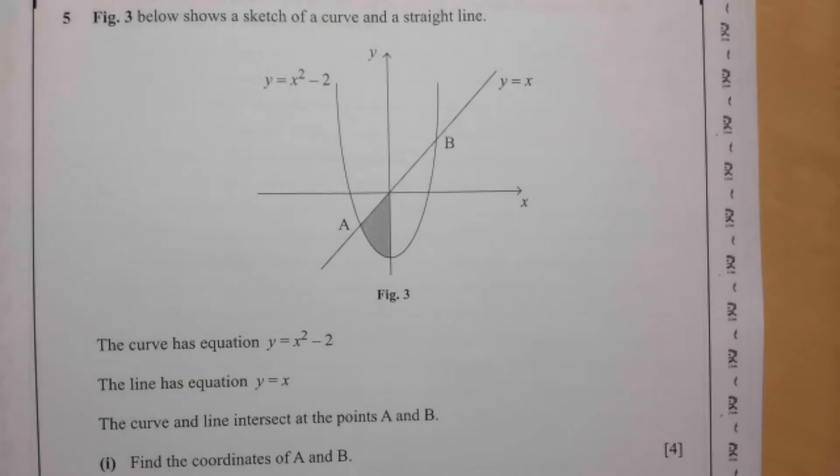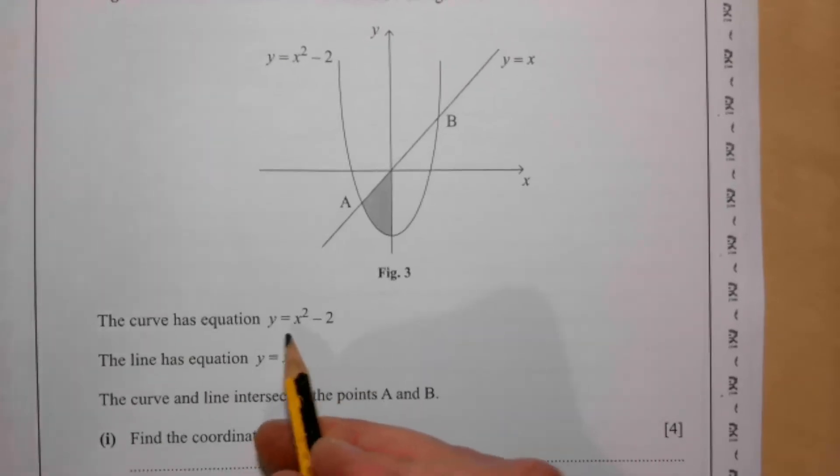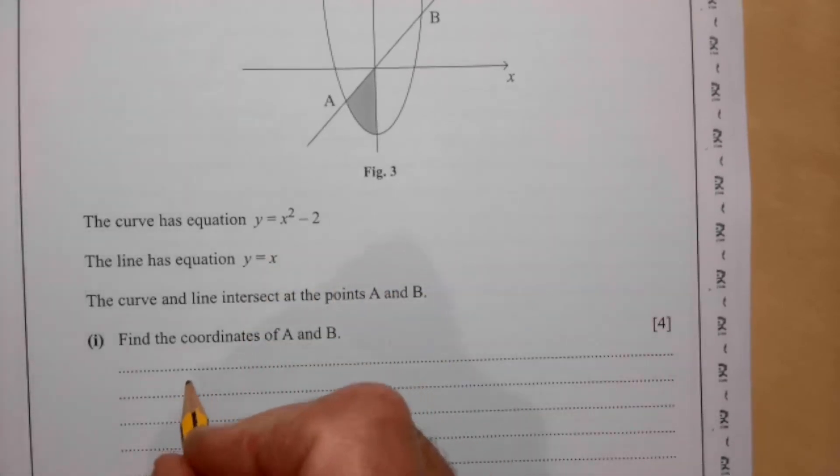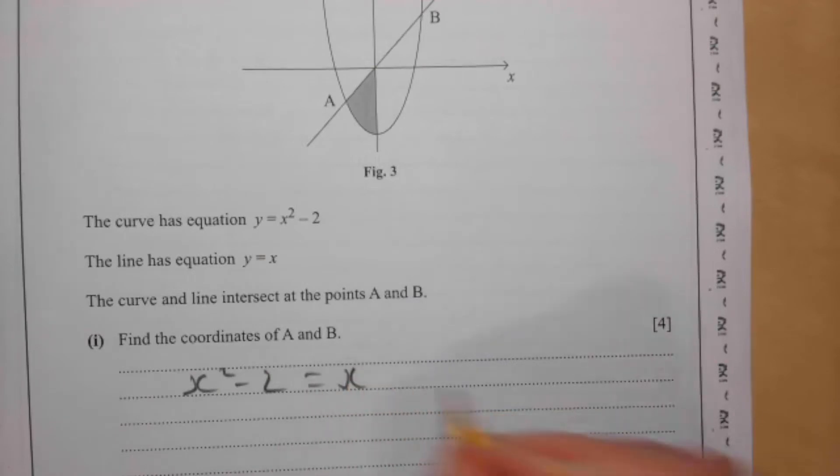Find the coordinates of A and B. Obviously in this scenario we want to put the two equations equal to each other, we're setting y, so we're solving it simultaneously. So it's effectively going to be x squared minus 2 equals x.